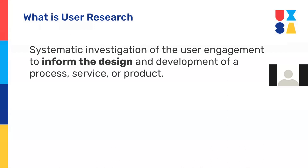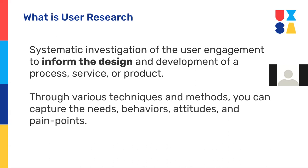User research is a systematic investigation — 'systematic' meaning there's a defined process to keep things focused — of user engagement, to inform the design and development of a process, service, or product. Using various techniques and methods, we can capture the needs, behaviors, attitudes, and pain points of users. There are over a hundred such techniques and methods — one book alone lists a hundred of them — and different ones can capture different things at different stages of the process.